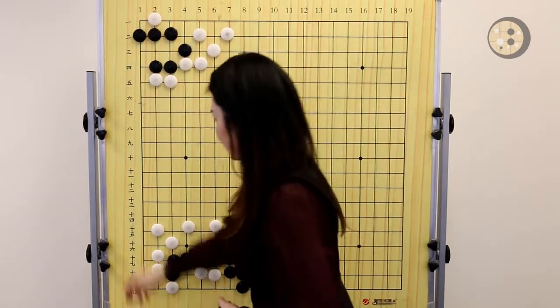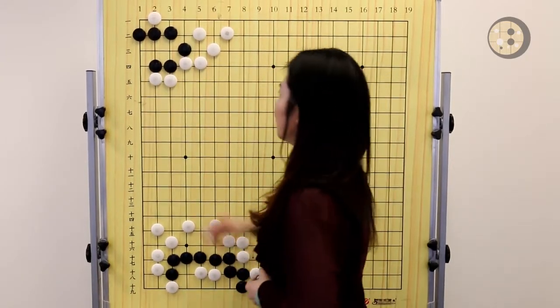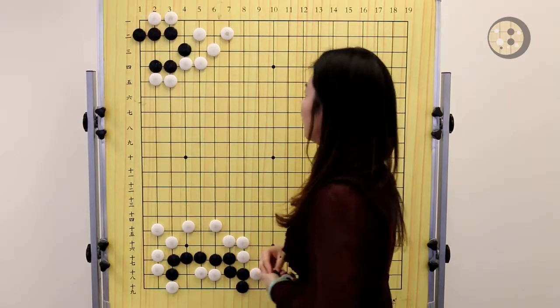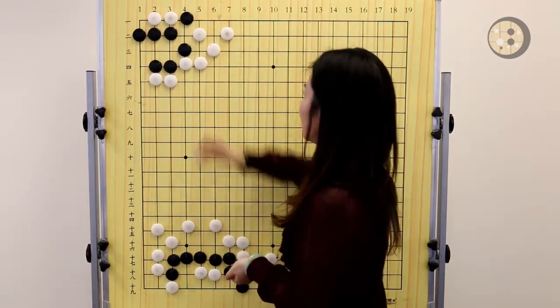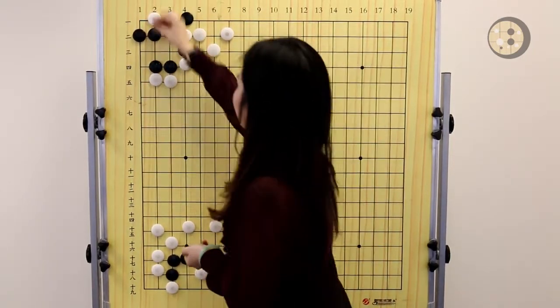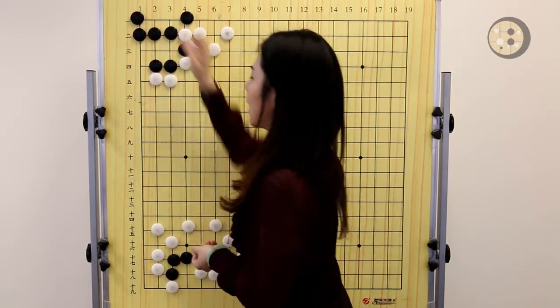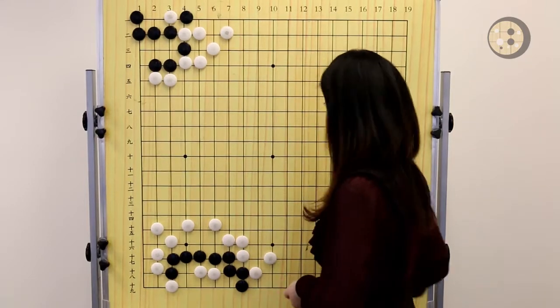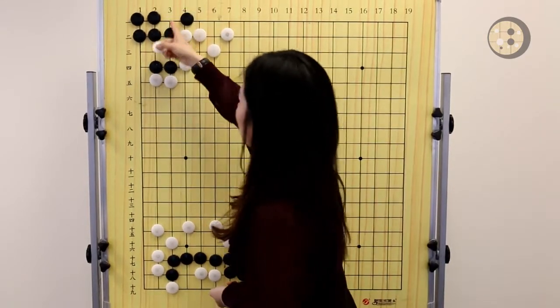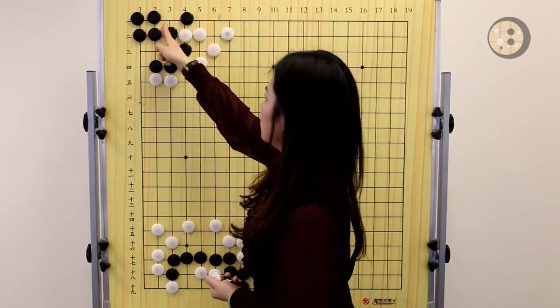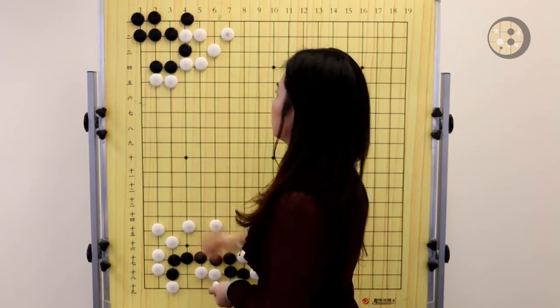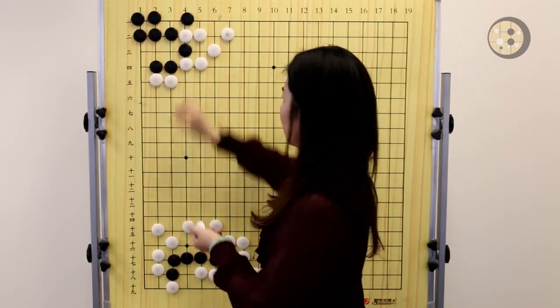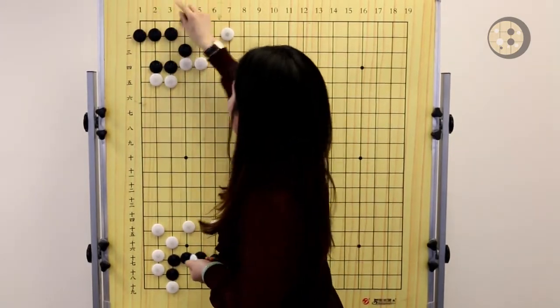If we just simply connect, that doesn't work because now white can try to connect these two stones and sacrifice them. Even though you can capture these two stones, it's not enough to make a real eye. White has the throwing move here. After you capture the stone, this eye is a false eye. So we only have one eye here. That's not enough. Connecting here is not correct.